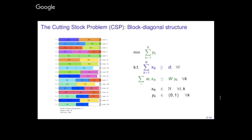An example of a problem that can be decomposed using Dantzig-Wolfe is the cutting stock problem. In this problem you have one-dimensional stock material with a fixed width, and you must define cutting patterns in this stock material in order to cover demands of items — cutting big pieces into small pieces to satisfy demands. The linking constraints say that among all the cutting patterns you define, you must cover the demand. The subproblem constraints say that each cutting pattern must satisfy the knapsack constraint on the width of your stock material.